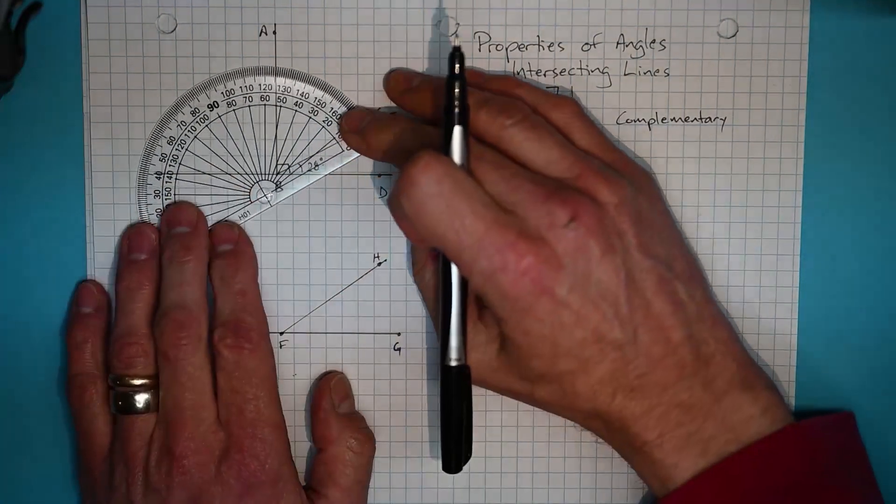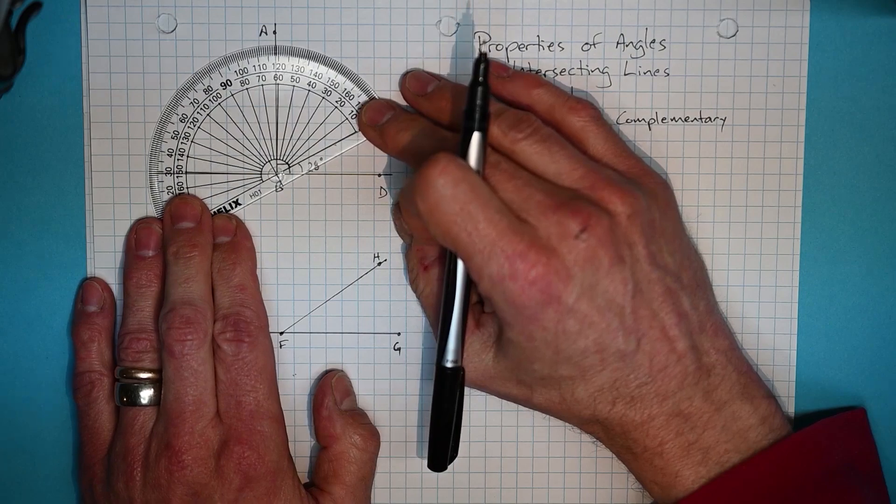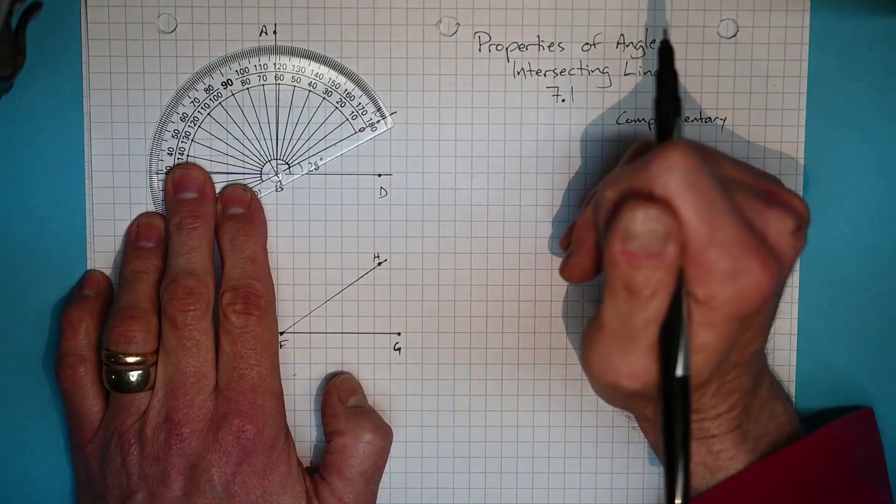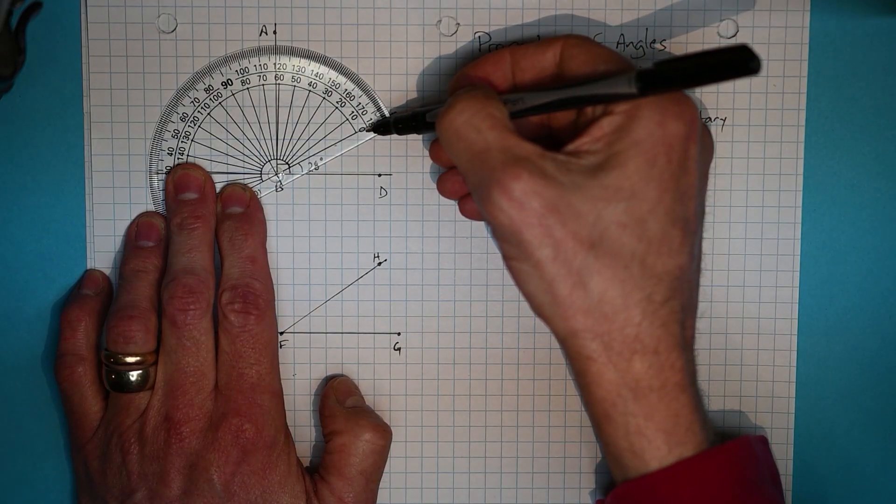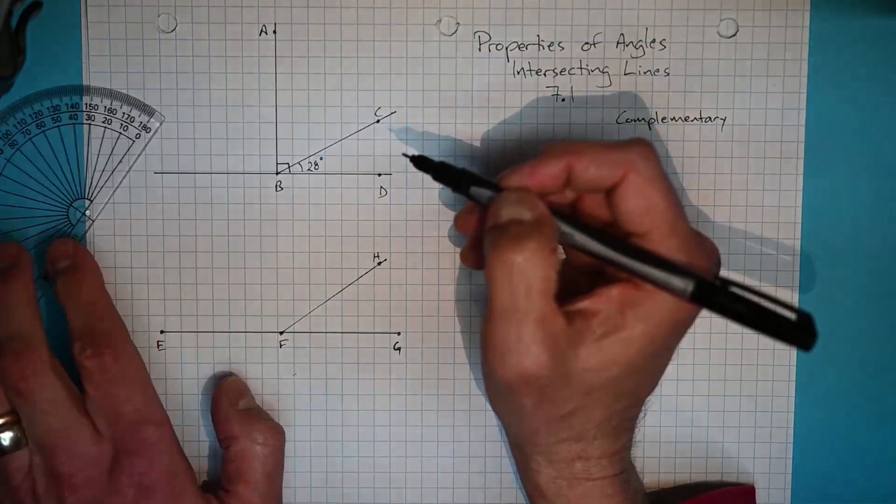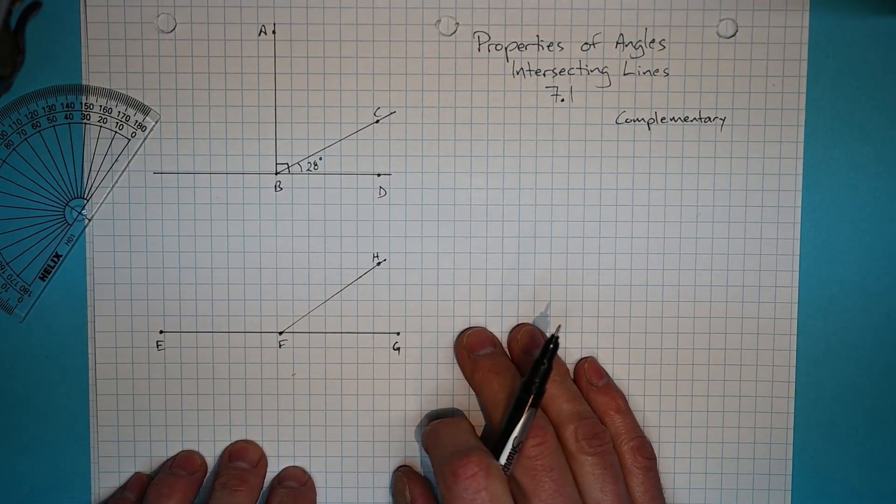Now we can measure the angle on the other side, but some of you are probably figuring out already there's no need to do that. I can look right across from the zero going up past the 50, just past the 60 by 2 degrees. We can see that this one is actually 62 degrees.